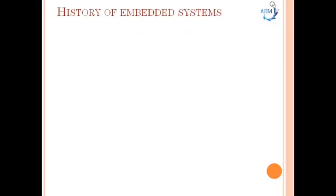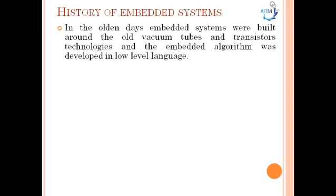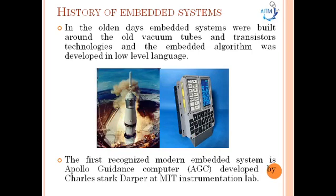Now going to the history of embedded systems. In the early days, embedded systems were built around vacuum tubes and transistor technologies, and embedded algorithms were developed in low-level languages. As you can see in the picture, this is the first recognized modern embedded system — the Apollo Guidance Computer. It collected and provided flight information and automatically controlled all navigational functions of the Apollo spacecraft.